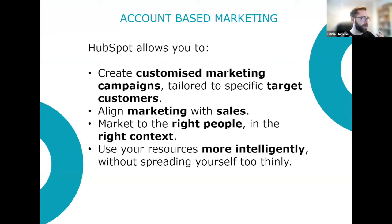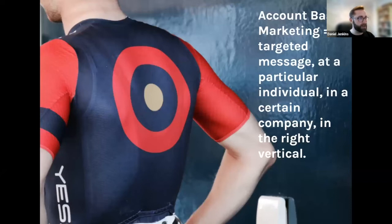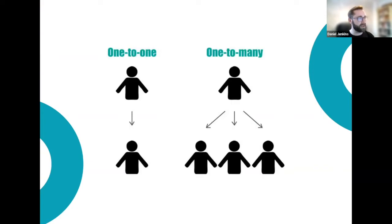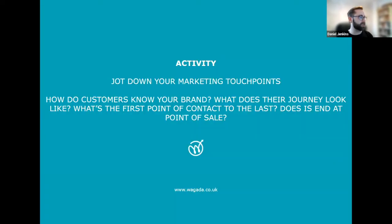To wrap up ABM: it's about creating customised marketing campaigns tailored to specific customers, aligning marketing with sales, reaching the right people in the right context. We're being more intelligent — not spreading too thinly, focusing on the right areas. Getting the right message to the right individual in the right environment at exactly the right time to drive that action. All of these communications feel much more one-to-one than one-to-many, and that whole process puts your brand much closer to your customer.